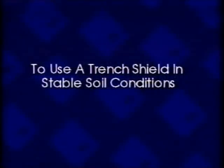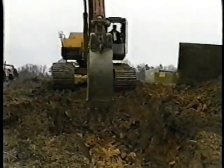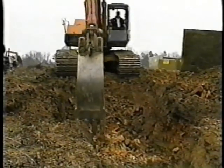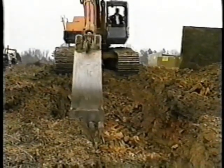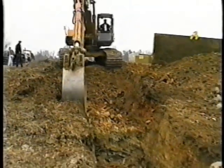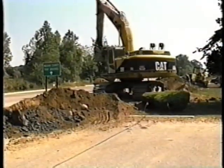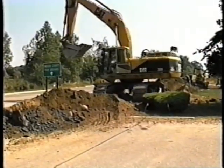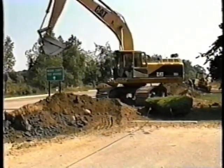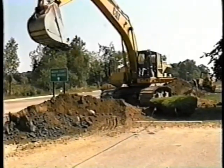To use a trench shield in stable soil conditions, excavate your trench approximately six inches or 15 centimeters wider on each side of your trench shield. Excavate to a depth within 36 inches or one meter of your pipe grade.